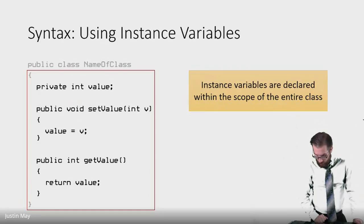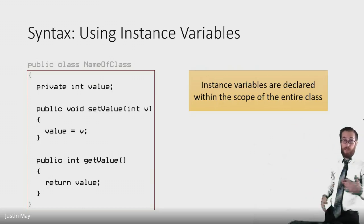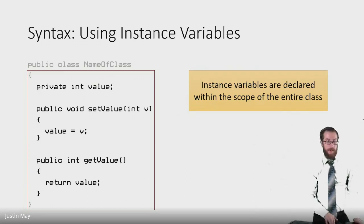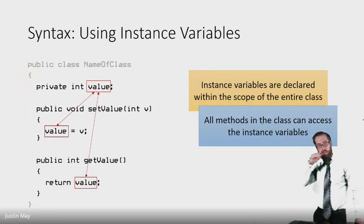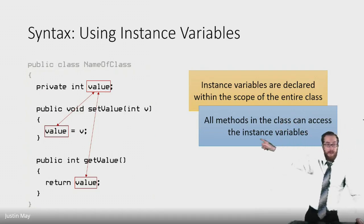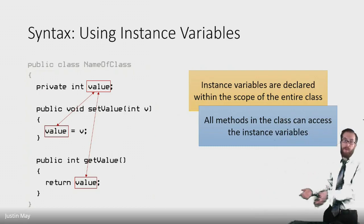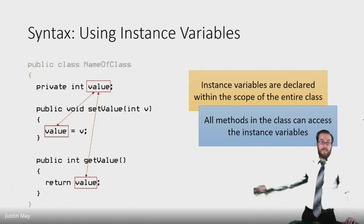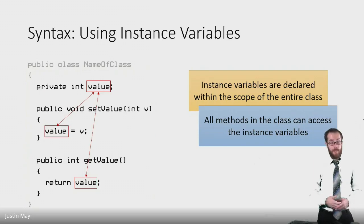Instance variables are declared within the scope of the entire class — inside the curly brackets of the class — which means everything inside that scope can access these instance variables. Here we've got an instance variable called value and two methods: setValue and getValue. Both of these methods are referencing that instance variable. setValue is assigning a value to it, and getValue is returning the value of that instance variable. Notice we don't redeclare the variable in the methods; we're just using that instance variable — they're sharing it, seeing the same state.